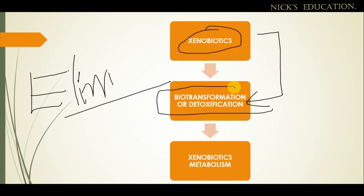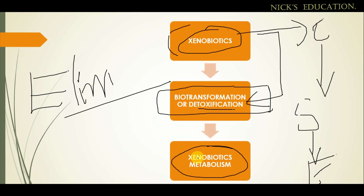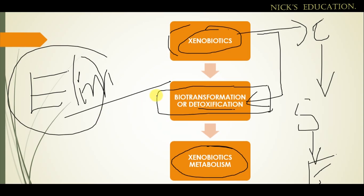The elimination of xenobiotics happens through biotransformation or detoxification. Xenobiotics need to be biotransformed — their complex chemical structure should be reduced to a simple chemical structure, then only they can be eliminated out of the body. This is achieved by xenobiotic metabolism.